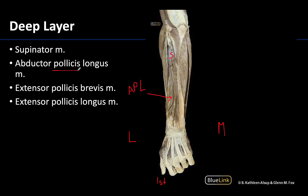If you see 'pollicis' you know you're going to the first digit or the thumb. Right next to the abductor pollicis longus is the extensor pollicis brevis — they are side by side, with the abductor pollicis longus superior and the extensor pollicis brevis inferior. Medial to those two muscles is the extensor pollicis longus, whose tendon is also heading for the first digit or thumb.